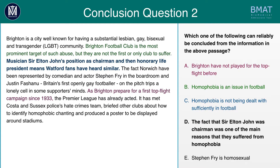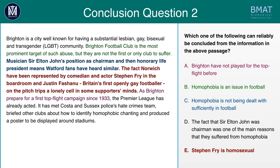D states: 'The fact that Sir Elton John was chairman was one of the main reasons they suffered from homophobia.' Be careful what this statement actually says — it could have potentially been a reason, but we don't know if it was one of the main reasons. And E — 'Stephen Fry is homosexual' — it is implied that Stephen Fry is non-heterosexual and likely part of the LGBT community, but he could be a member of any other non-heterosexual group, for example bisexual or transsexual. It cannot necessarily be inferred that he is homosexual.